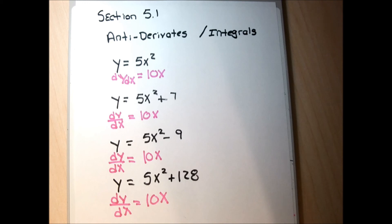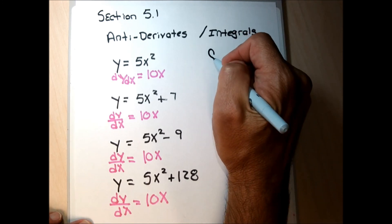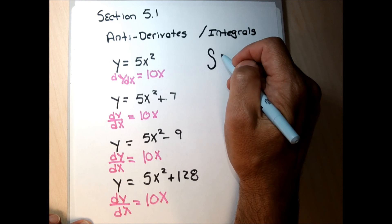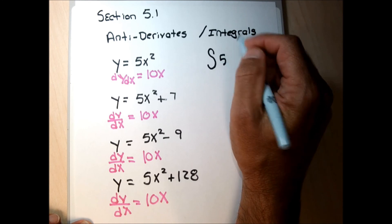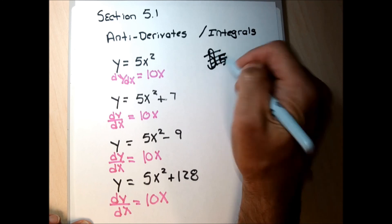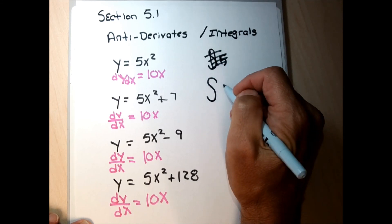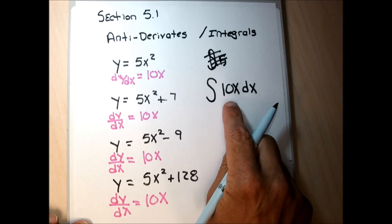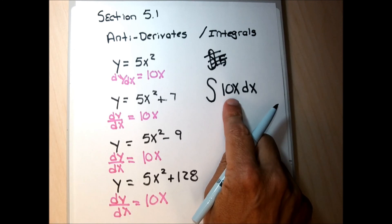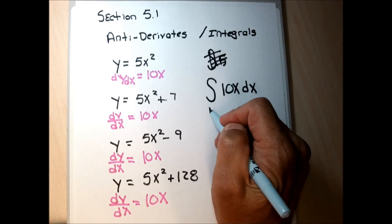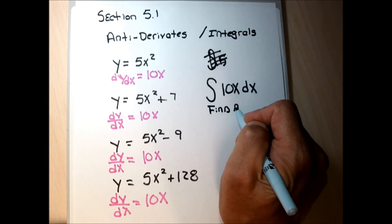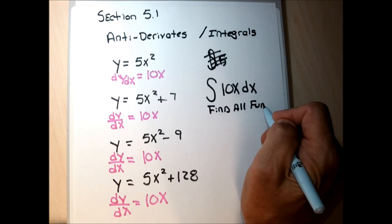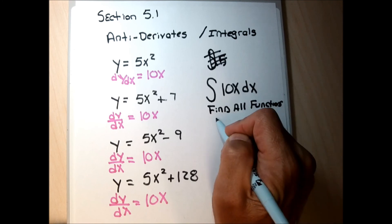In section 5.1, we're given a notation that asks us to find the function that has a given expression as its derivative. This symbol here is called an integral symbol or an antiderivative symbol. The problem written like this is asking me to find all functions whose derivative is 10x.